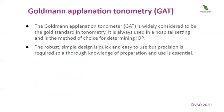Goldman Aplanation Tonometry (GAT) is widely considered to be the gold standard in tonometry. It is always used in a hospital setting and is the method of choice for determining IOP. The robust, simple design is quick and easy to use, but precision is required, so a thorough knowledge of preparation and use is essential.